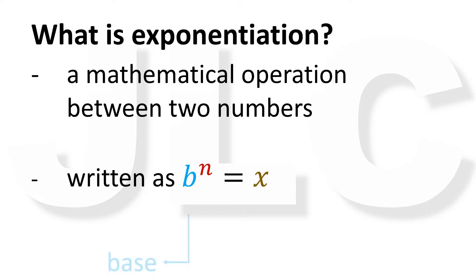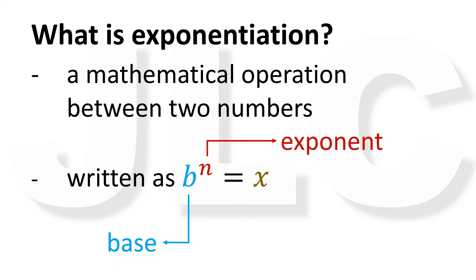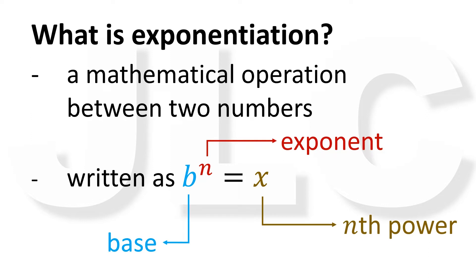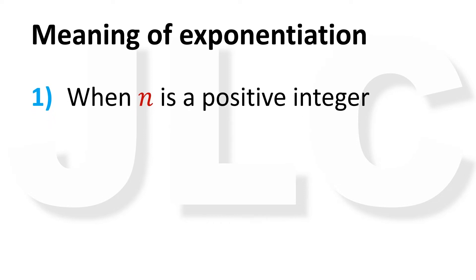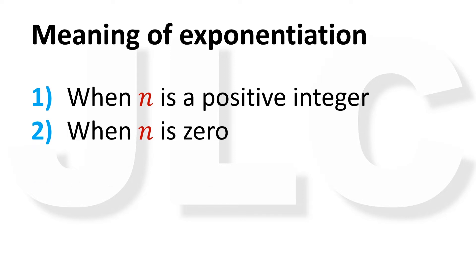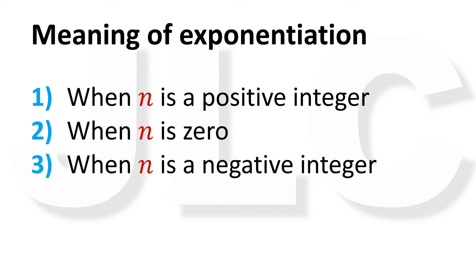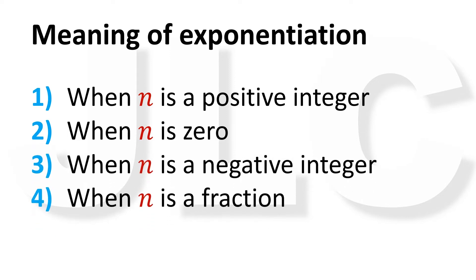The number b is called the base, and the superscript n is called the exponent. The result of this operation, x, is called the nth power. The meaning of this operation depends on what type of number the operands are. In this video, we will define exponentiation when the exponent is a positive integer, when the exponent is zero, when the exponent is a negative integer, and when the exponent is a fraction, given that the base is a real number.